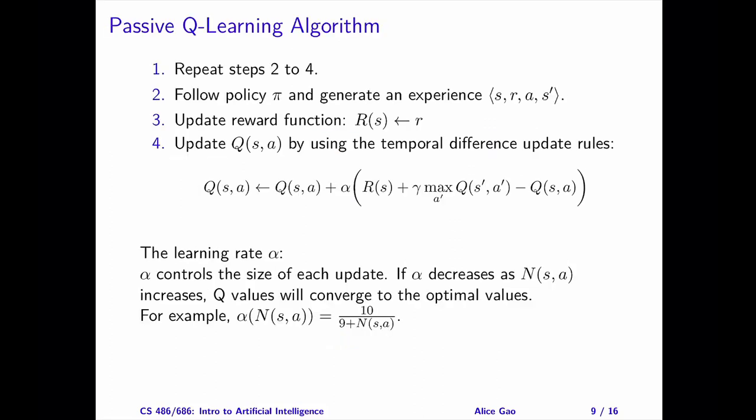Let's take a look at the passive version of the Q learning algorithm. Recall that in passive reinforcement learning, the agent has a fixed policy and the goal is to learn the expected utility of following the policy. In this case, our goal is to learn the Q value, which is the agent's expected utility of taking action A in state S.